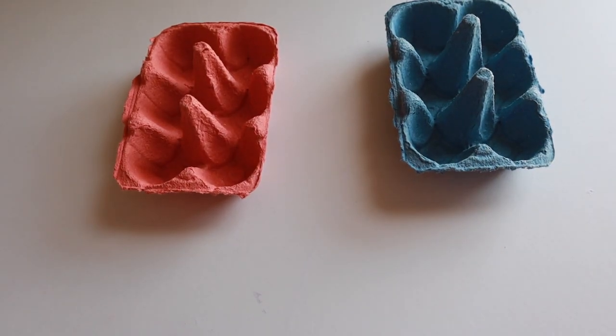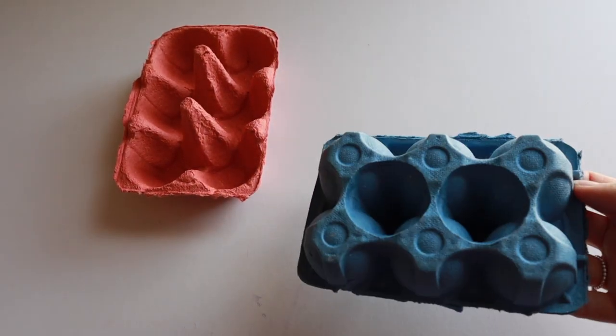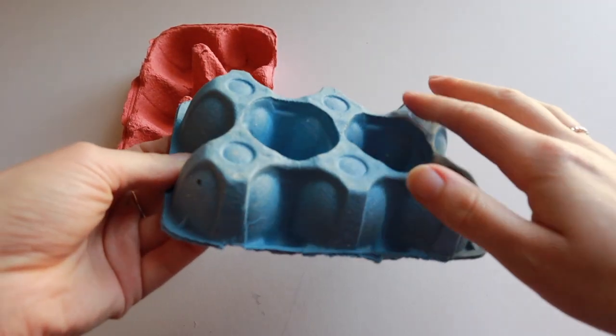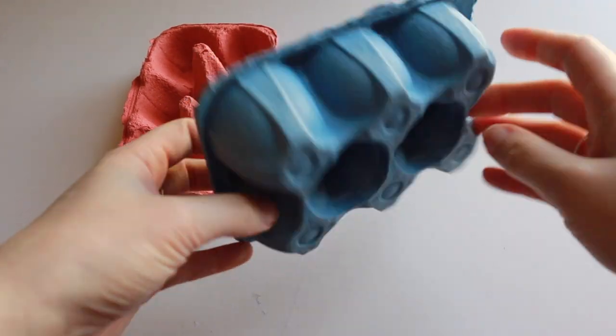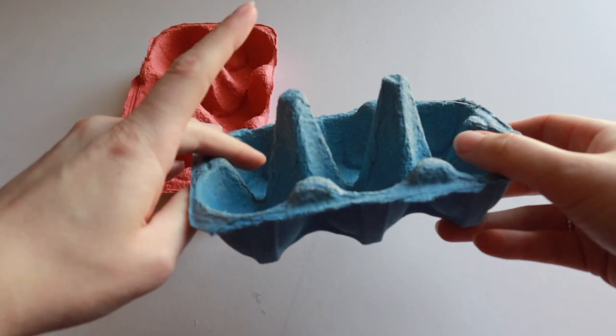So we are going to start by making the body. For this we will be using an egg box. Later I will be using the rounded side, but for now we are going to cut out one of the cone shapes in the middle.